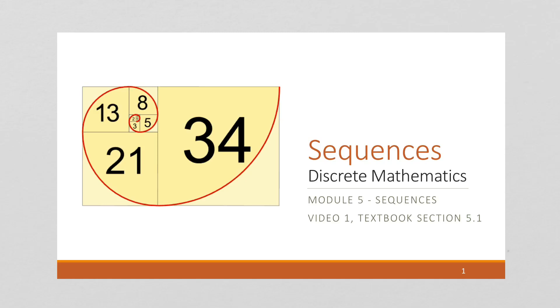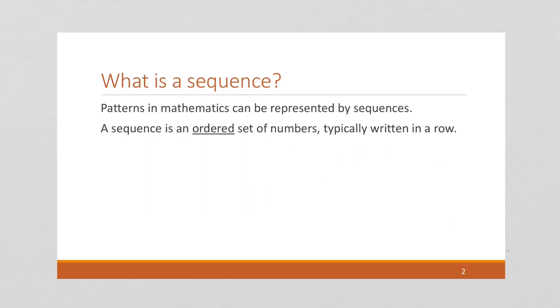In this video we're going to introduce sequences. Sequences are very important in discrete mathematics and the next type of proof we're going to learn is going to be proofs over sequences and summations. So that's what we're going to talk about today. So what is a sequence? Well it's a representation of a pattern. Patterns in mathematics can be represented by sequences. In particular it is an ordered set of numbers where the order matters.